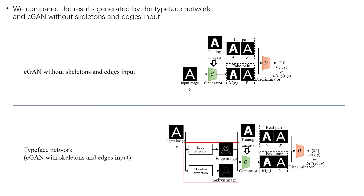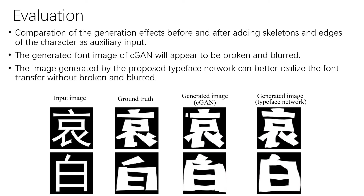The second part is the comparative evaluation to show the advantage of using skeletons and edges as auxiliary input. We compare the generated images of the Typeface Network and a regular CGAN without skeletons and edges input. The generated font image of the regular CGAN in the third column appears to be broken and blurred, while the image generated by the proposed Typeface Network in the fourth column can better realize the font transfer without being broken and blurred.